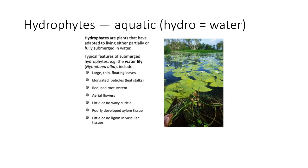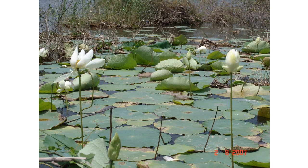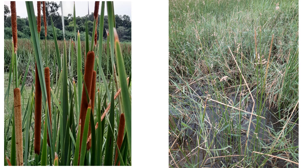You can see Nymphaea lotus, known as 'nilofer' in Urdu — its root is even used in Sindh as a vegetable called 'bay'. This is Typha domingensis, a highly water-loving or moisture-loving plant. This is Schoenoplectus littoralis, a sedge which is very commonly found in almost all wetlands.